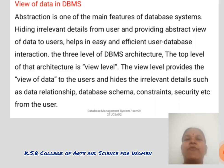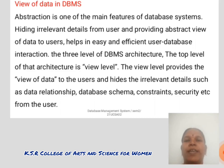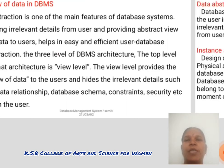The three levels of database management system architecture. The top level of architecture is the view level. The view level provides the view of data to the user and hides the irrelevant details such as data, relationships, database schema, constraints, security, etc. from the user.